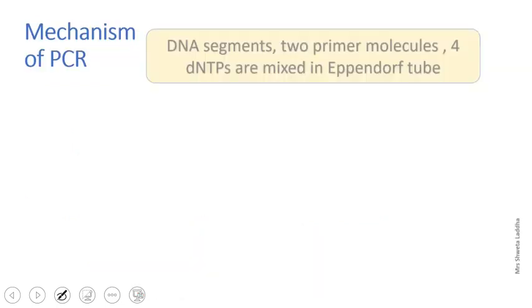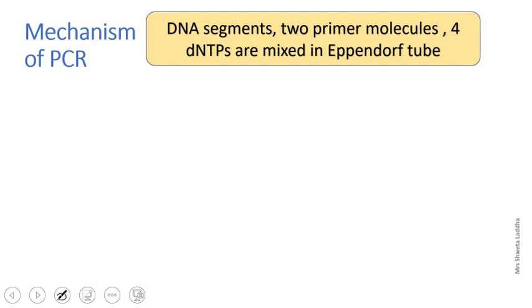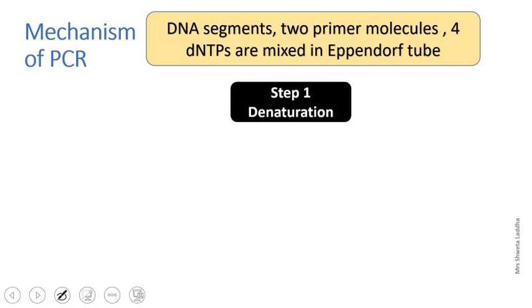Now, what is done in the mechanism of PCR? First, a DNA segment is taken of which we want to obtain many copies. Two primer molecules and four DNTPs are mixed in an Eppendorf tube. Then, three steps are carried out.